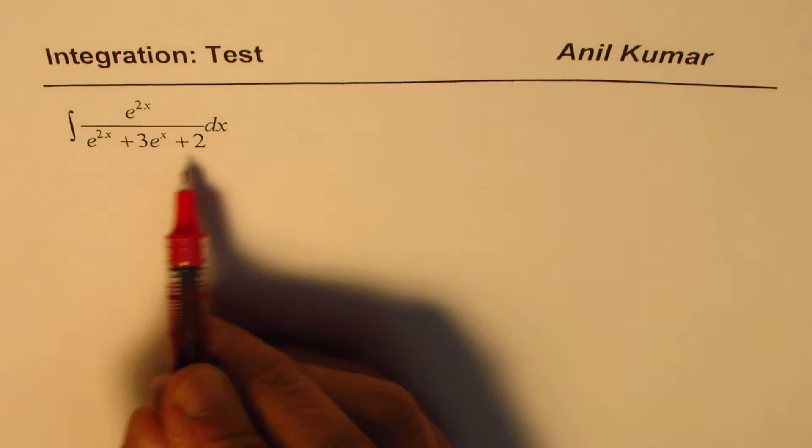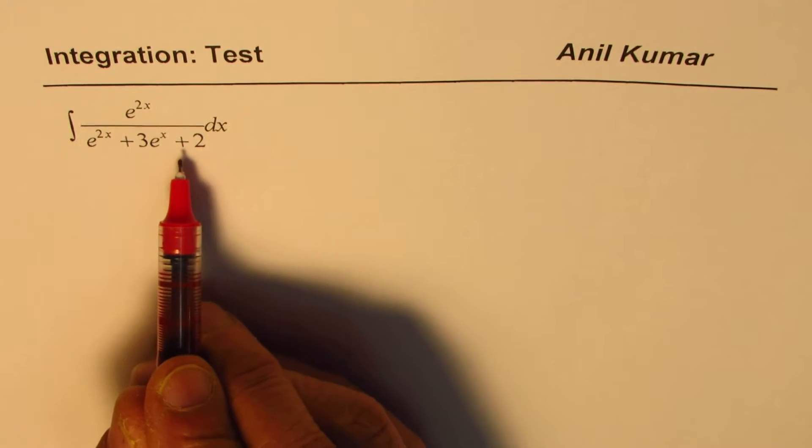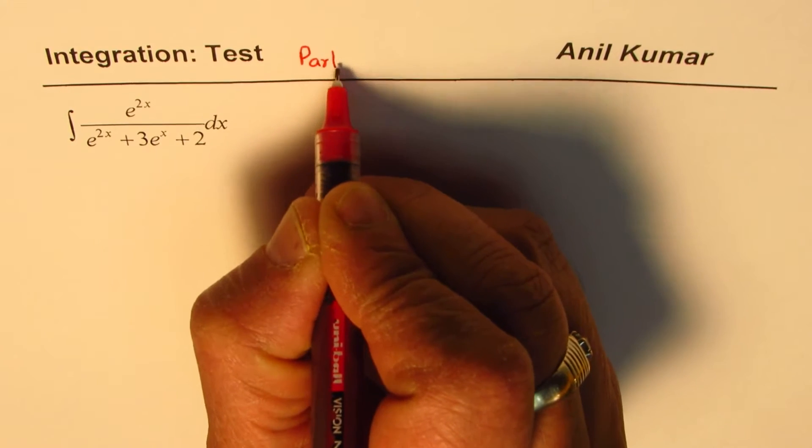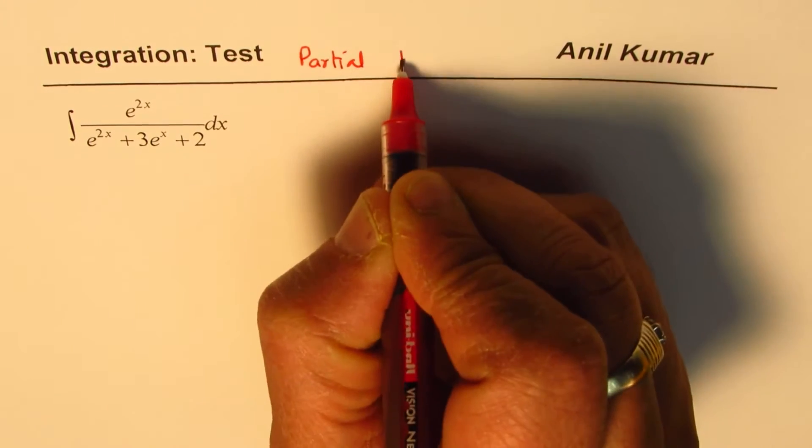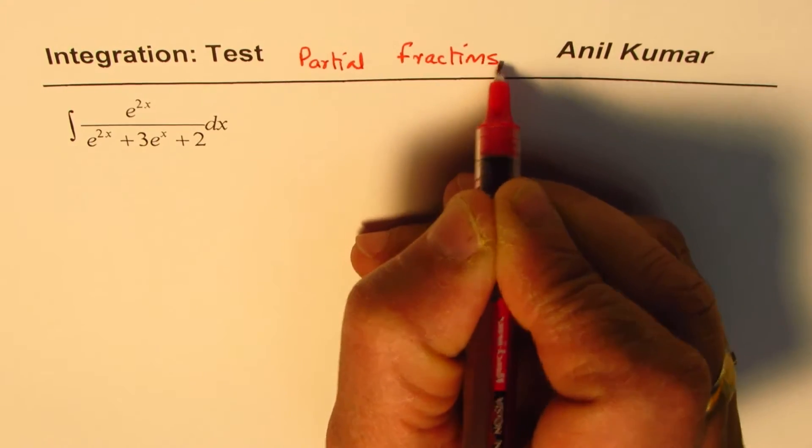Now I hope this reminds you of solving exponential equations. This looks like a quadratic equation right there, right? So you could factor and then do it. So if you could factor this, that means you could use partial fractions as the approach. So partial fractions will be our approach to solve this question. Let's see how.